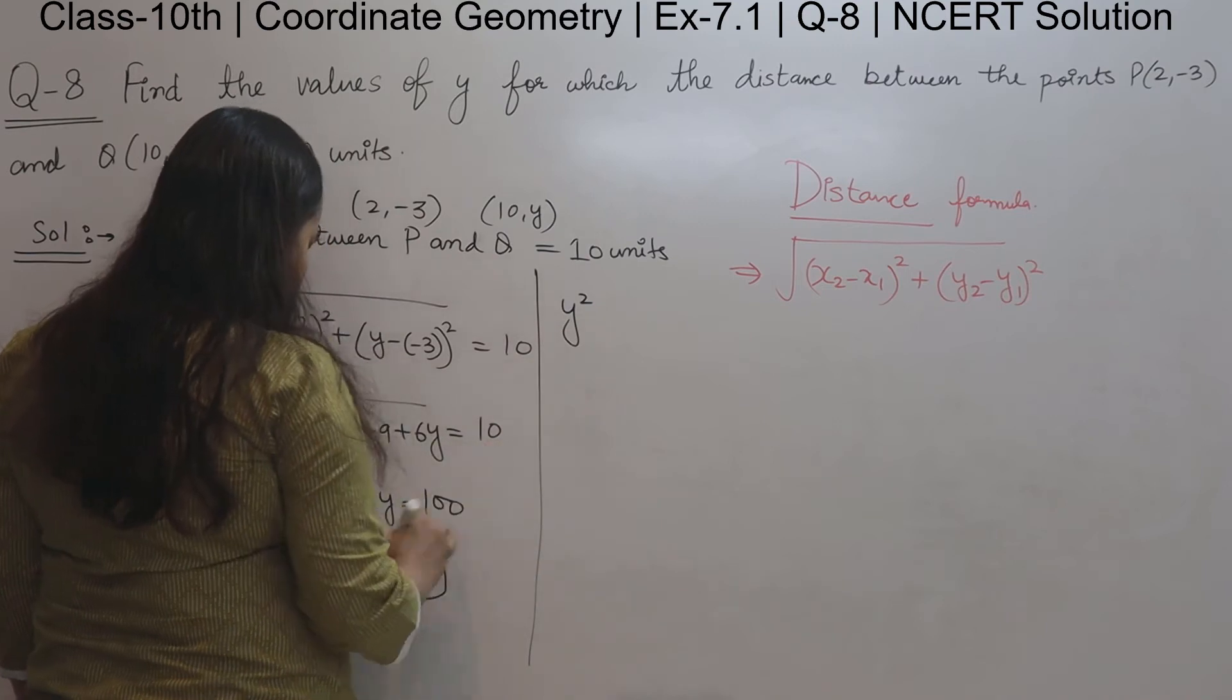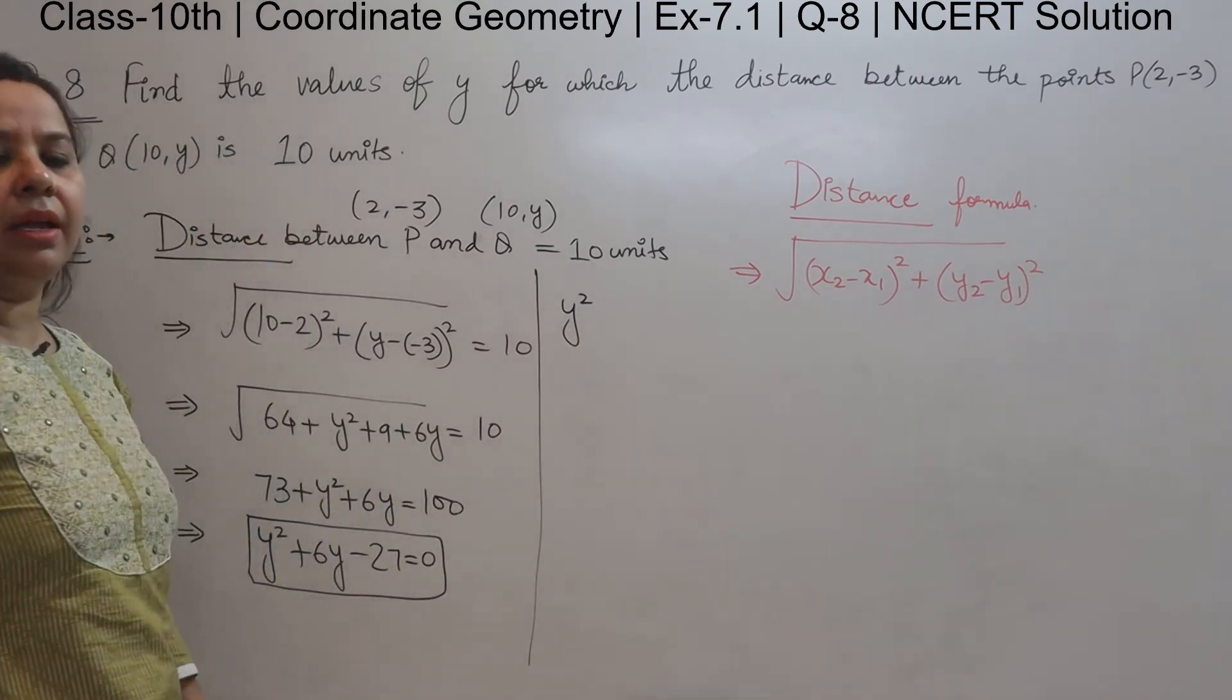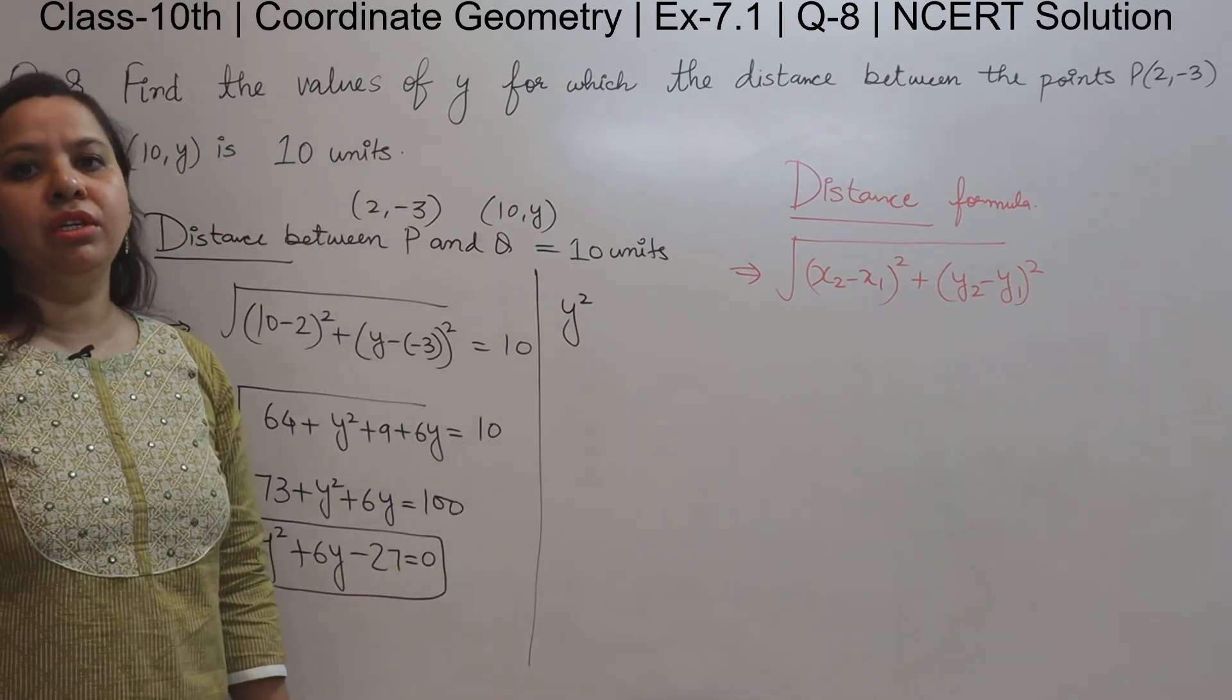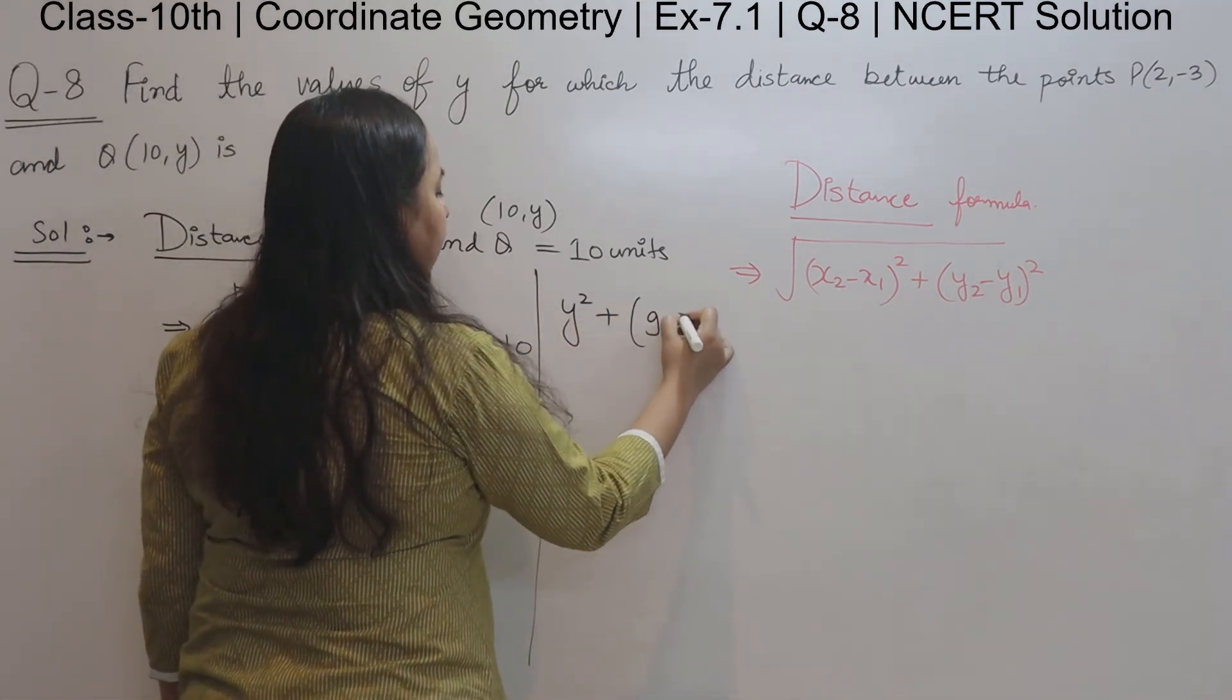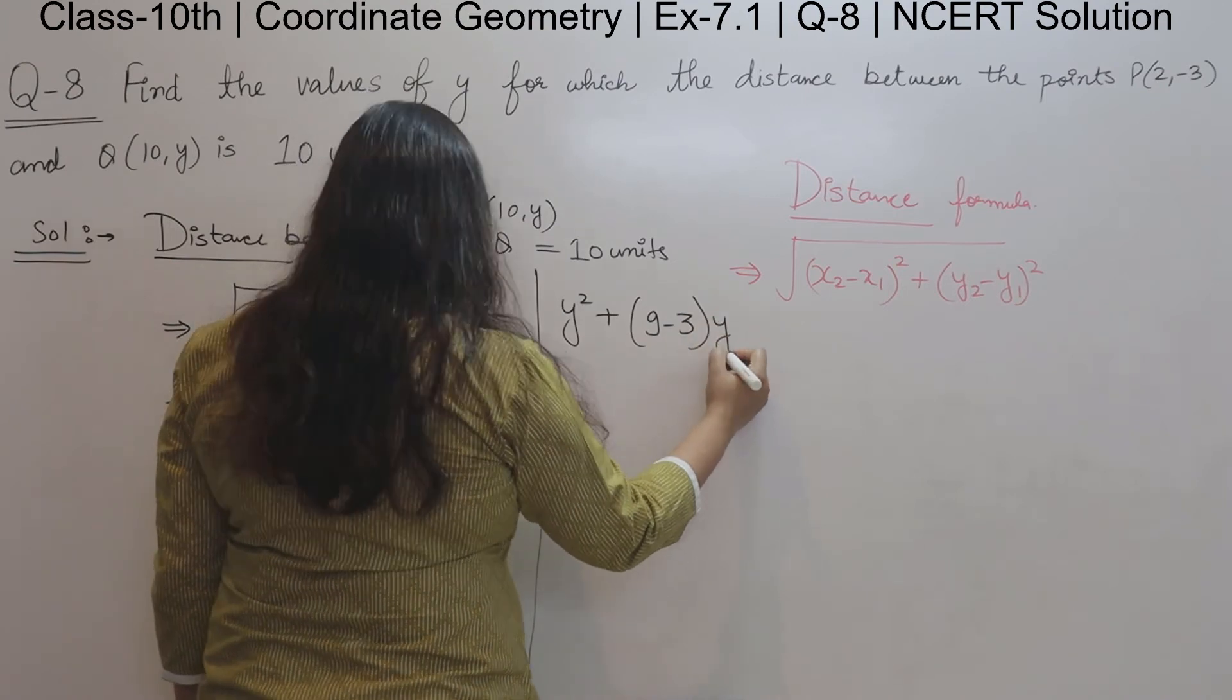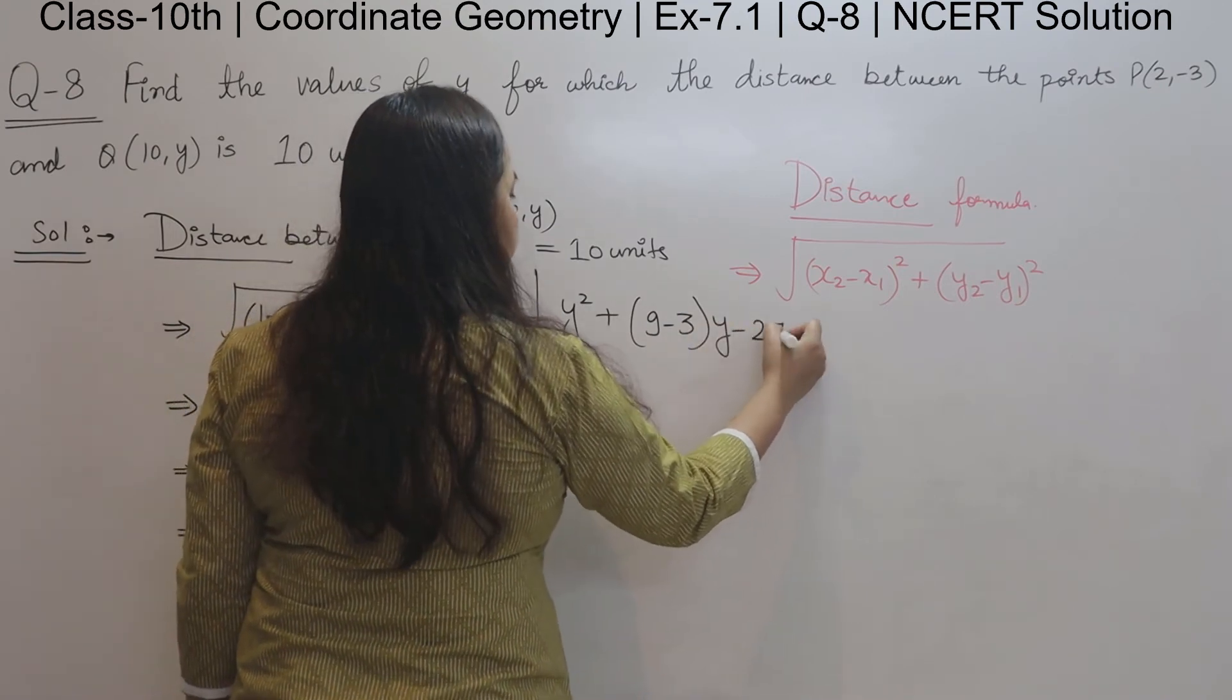y squared plus 6y minus 27. We need to factor this: the factors of 26 that give us 6 are 9 and 3, so 9 minus 3. In place of 6, we'll write 9 minus 3.